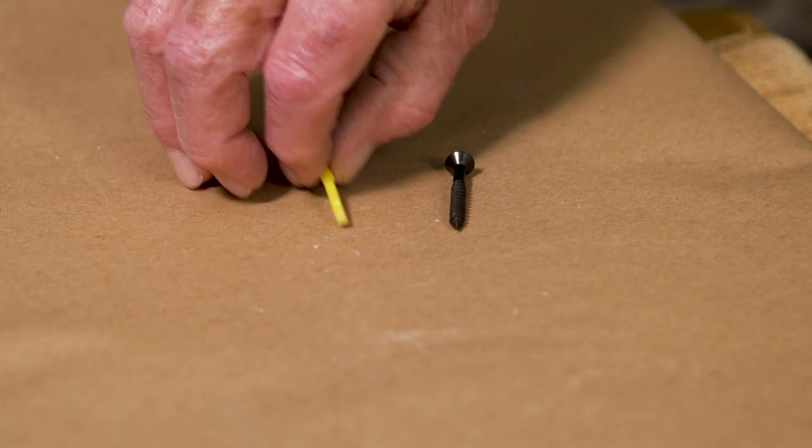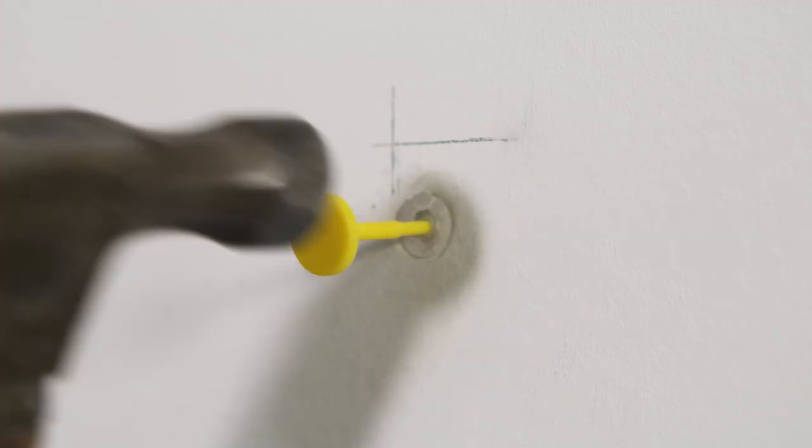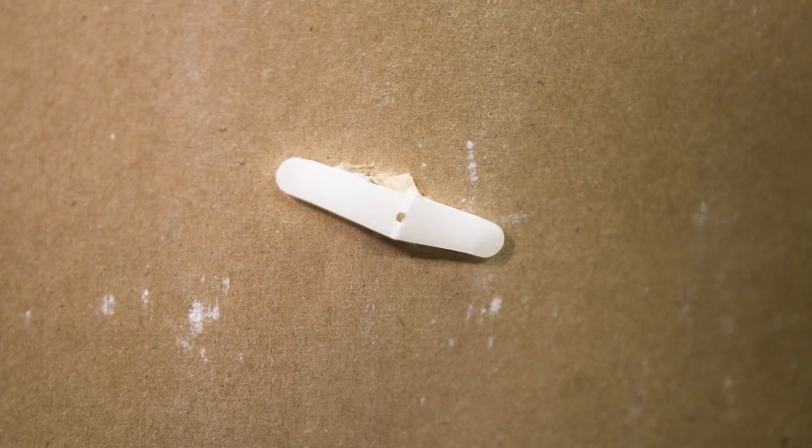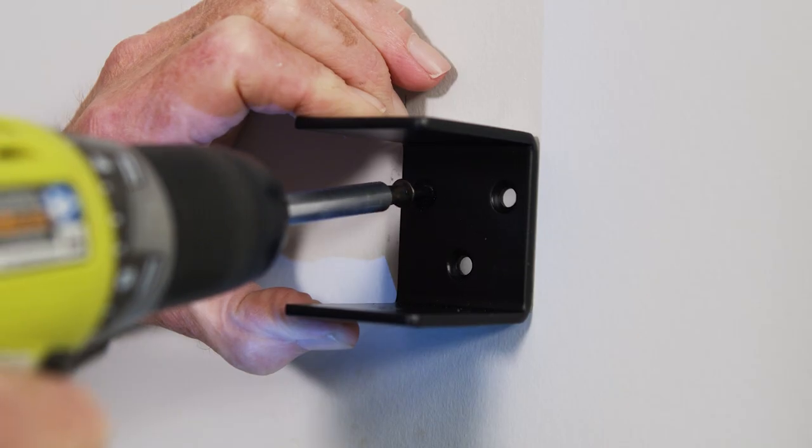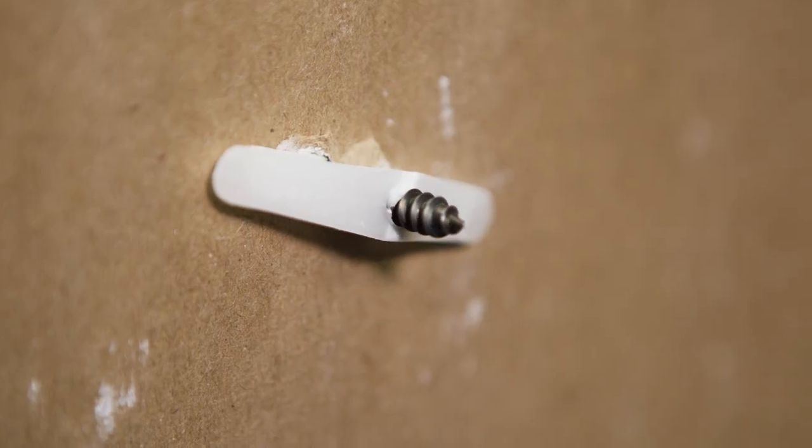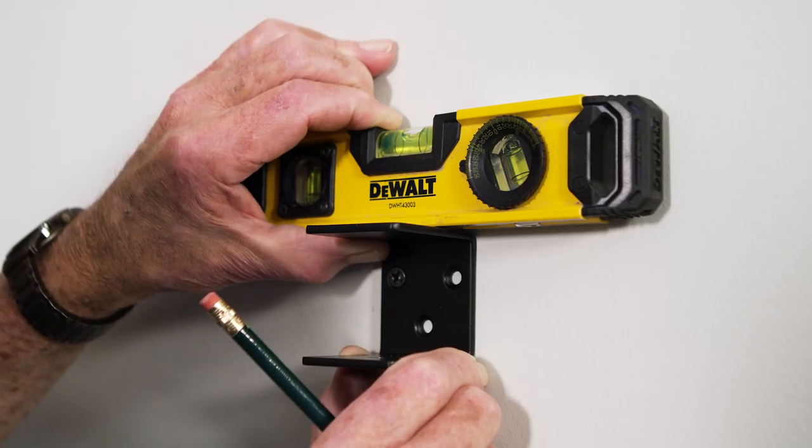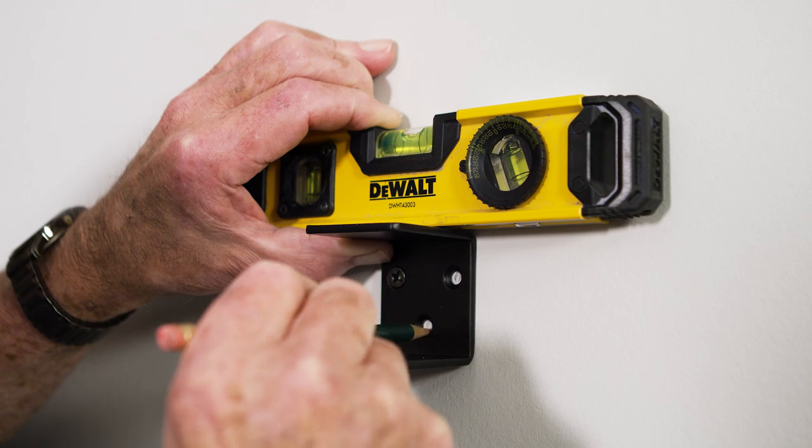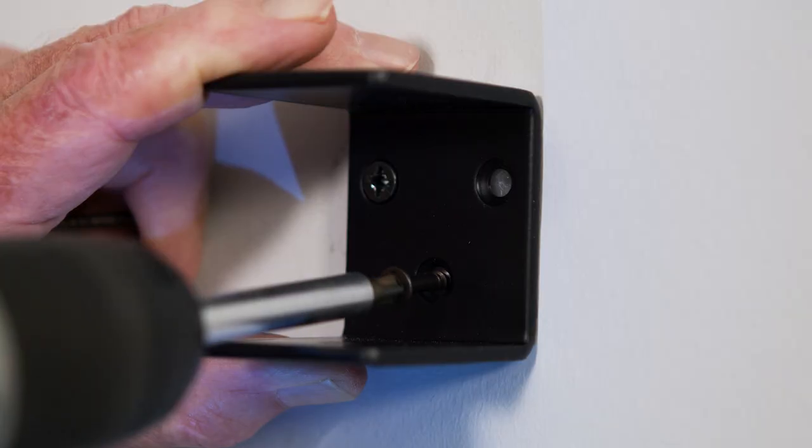Next, I place a provided pin into the anchor and give it a couple of taps. The pin causes the toggle wings to flare out on the back side of the wall. As the mounting screw is driven in, the wings draw up tightly against the back wall surface. I level the wall bracket, mark the location of the second and third holes, and repeat the process.